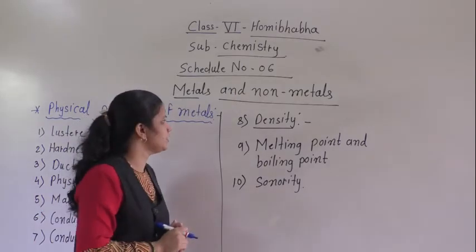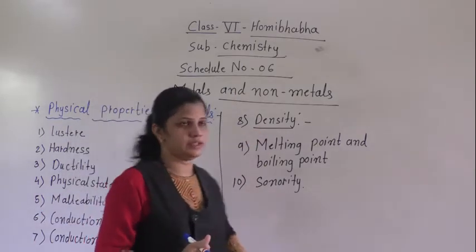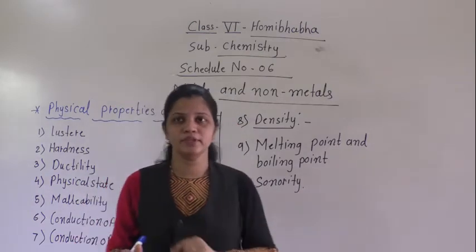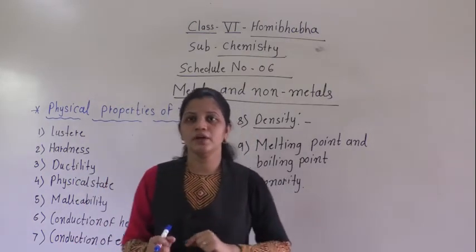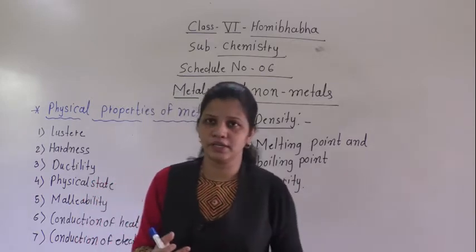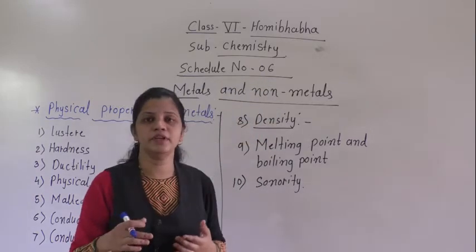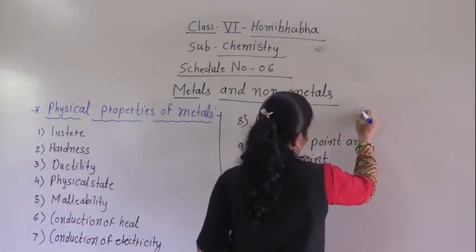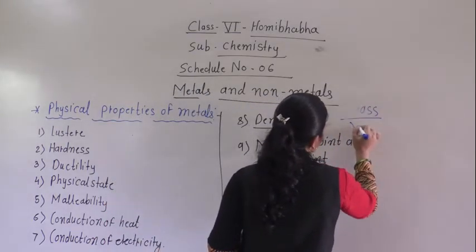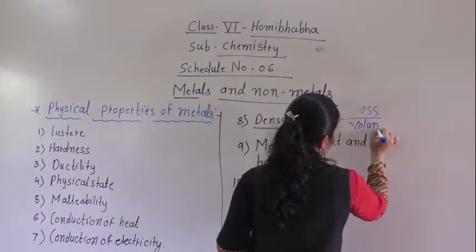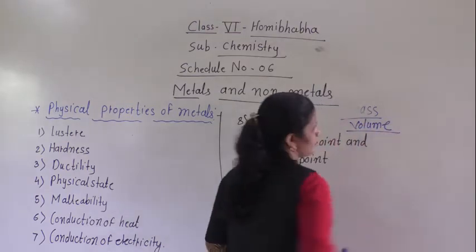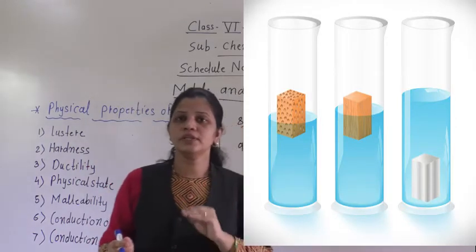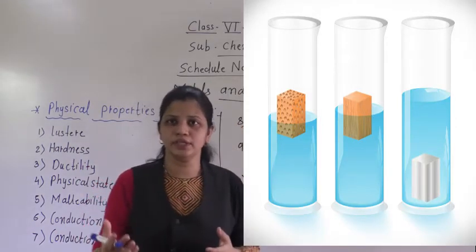The next physical property we will see is density. You may have learnt about density in physics. Density — for metals, mostly they have a high density. Density means mass upon volume. Mostly metals have a more density.